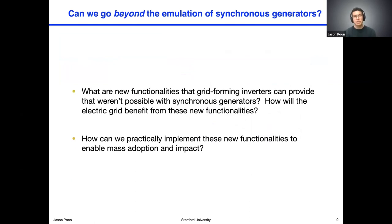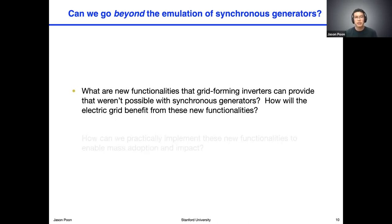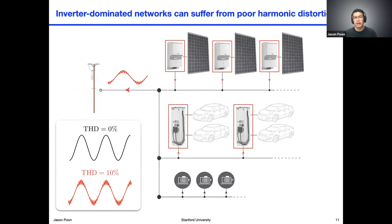I've decided to divide my presentation today to address both of these questions, presenting some of our work that poses small answers to both. We'll start with thinking about at least one new functionality that grid-forming inverters can provide that wasn't possible with synchronous generators. One aspect of this problem that we thought could be interesting is looking at what are called harmonic or harmonic distortion. When more and more inverters are introduced to a particular network, they can introduce these undesired harmonics that can detrimentally affect operation of the electric grid.